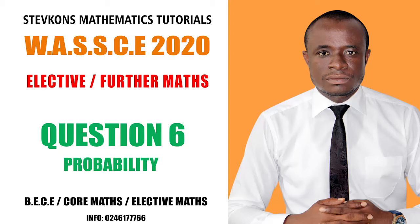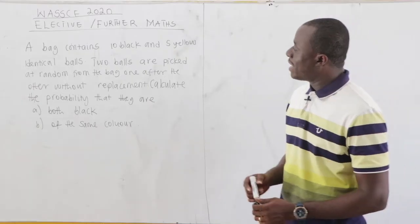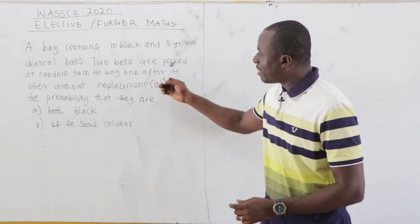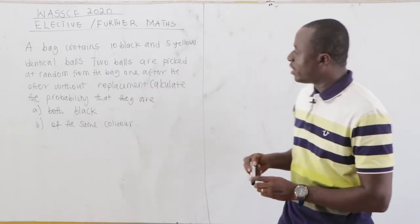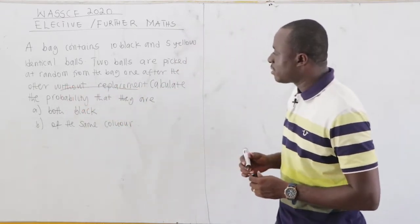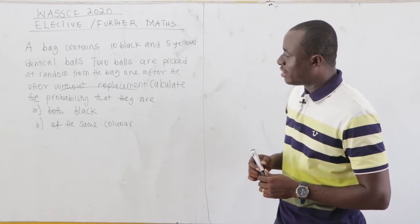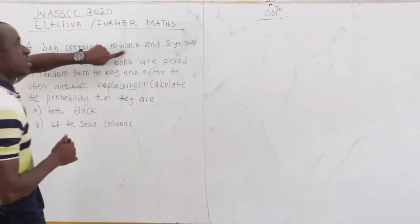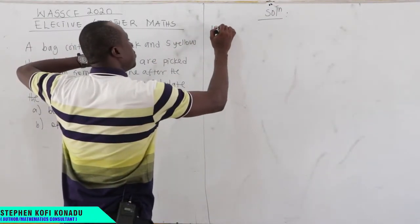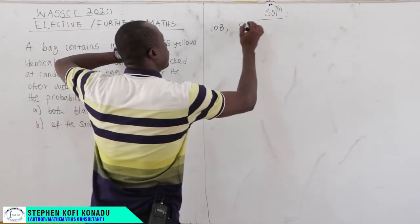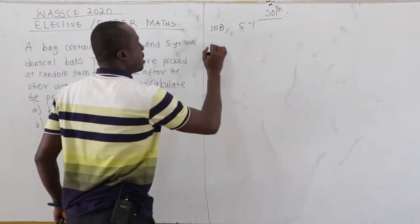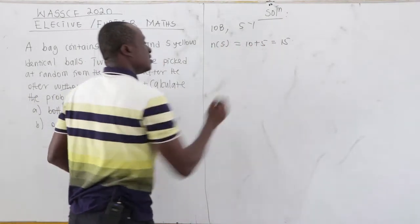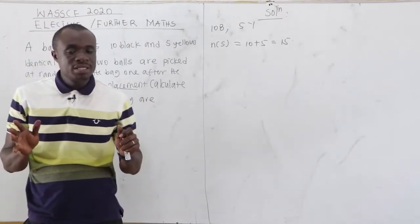2020 elective maths question number six. A bag contains 10 black and 5 yellow identical balls. Two balls are picked at random from the bag one after the other without replacement. We have 10 black and 5 yellow balls, so our total sample space is 10 plus 5, which is 15.